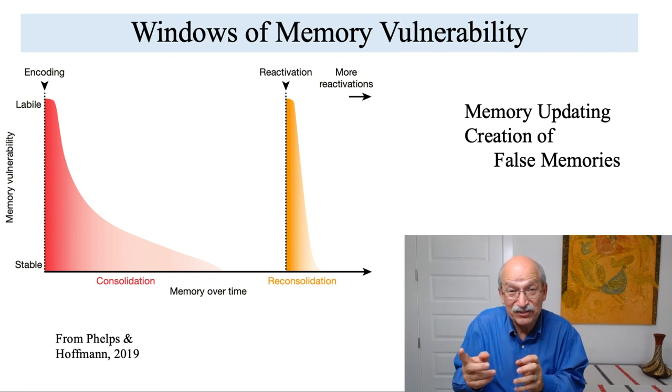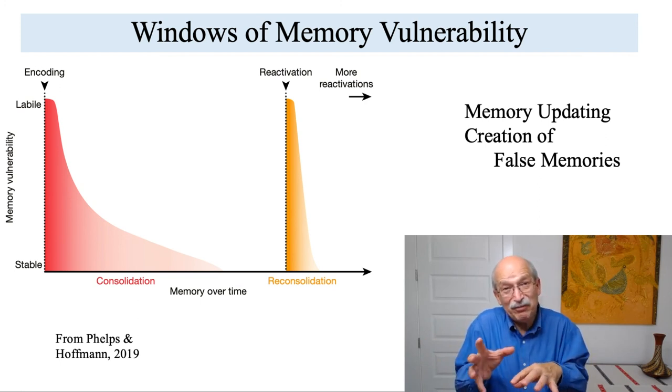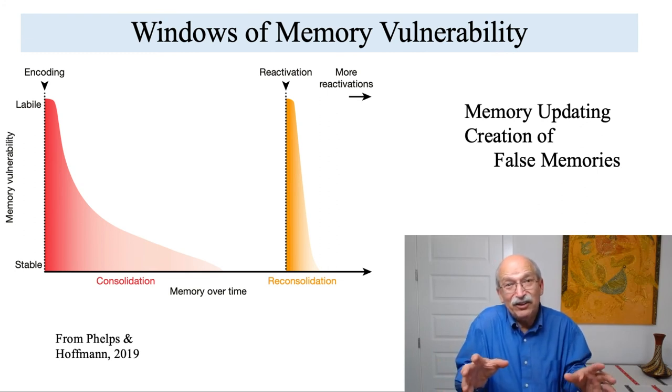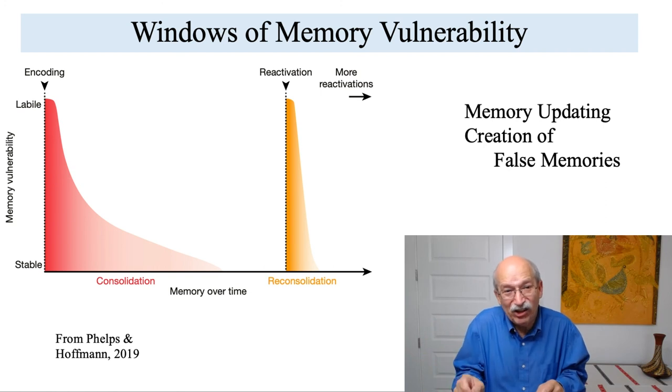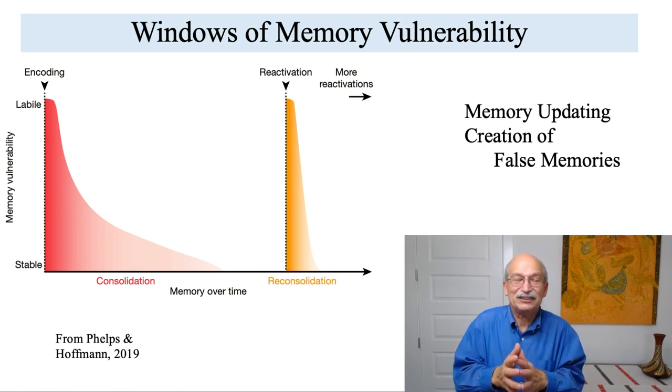Nevertheless, memories can become reconsolidated so that the memory is not really the same as it was the first time, if you've had a chance to recall it, talk about it, and discuss it. This has huge ramifications for how we talk about our past, because it tells us that each time we talk about some past event, the memory becomes open to modification.